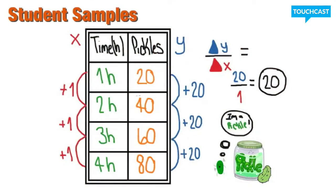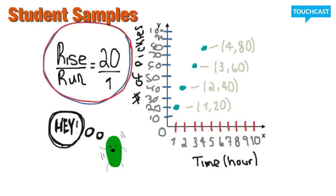The time it took me to eat 20 pickles took me one hour, and the time it took me to eat 40 pickles took me two hours, and then when I ate 60 pickles it took me three hours. Rise over one — when I went from 20 to 40, I added 20, and I moved over one, so 20 over one is rise over one.